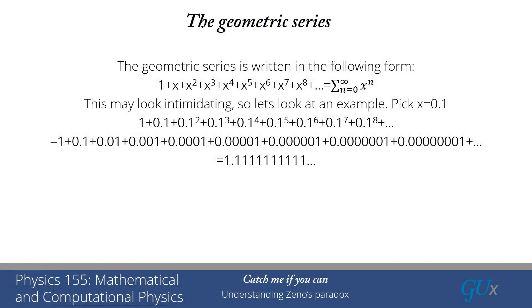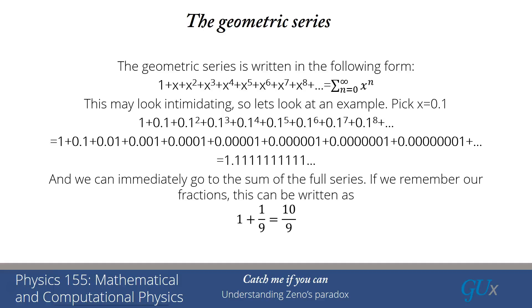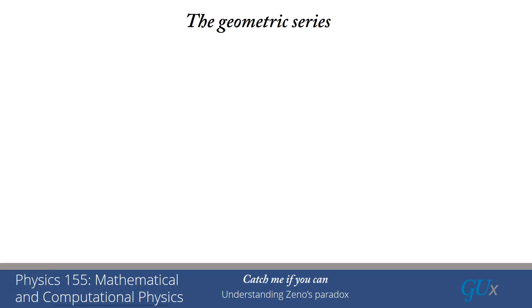It's 1.11111 with all those ones repeating all the way out to infinity. Now let's go back to probably it was fifth grade, maybe even fourth grade, where you were working with fractions and you figured out how to convert that infinite decimal into a fraction. The answer is that it can be converted into 1 plus 1 ninth or 10 ninths. Okay, good. We figured out how to sum an explicit example of the geometric series. How do we do it for the general case?